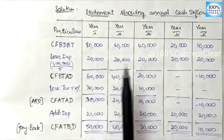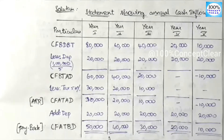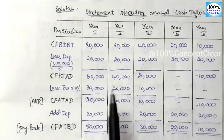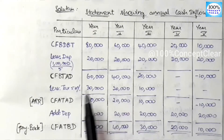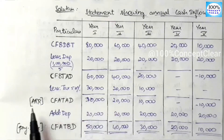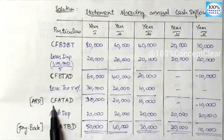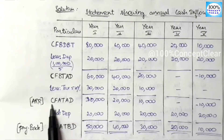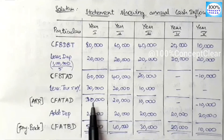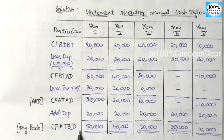Just to clarify: we calculate the cash inflows as cash flow after tax and before depreciation. In capital budgeting, we calculate all methods — payback period, net present value, profitability index, IRR — using cash flows after tax and before depreciation.